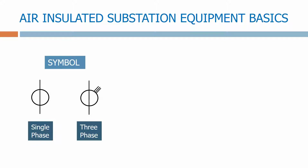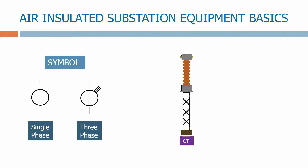And here's how we represent current transformers in our layout diagrams. A lot of the equipment looks the same inside a substation, so how do we identify a CT?